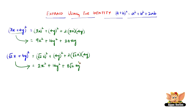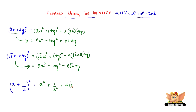Let us consider one final expansion which is slightly different: x plus 1 by x the whole square. There is a fraction here — but does that change anything? No, it doesn't change anything at all, because here x is a and 1 by x is b. So all we need to do is use the formula a plus b the whole square. We get x squared plus 1 by x squared plus 2 into x into 1 by x, which is 2 into a into b, and x and x get cancelled. So the expansion of x plus 1 by x the whole square is x squared plus 1 by x squared plus 2.